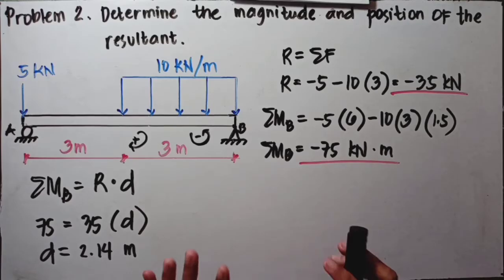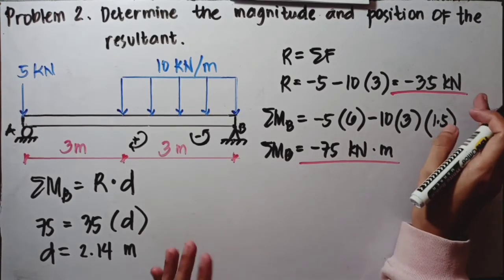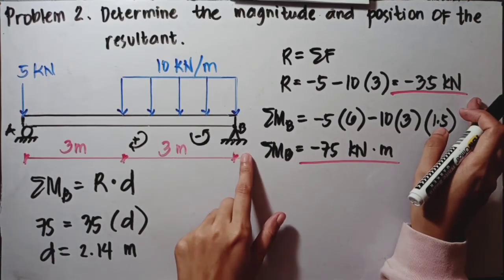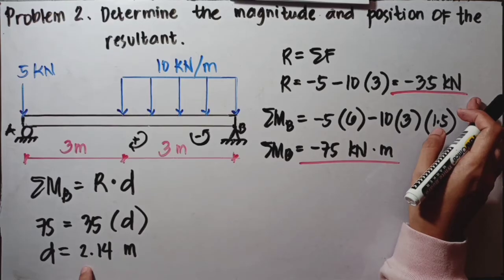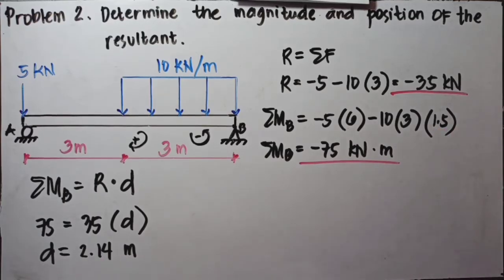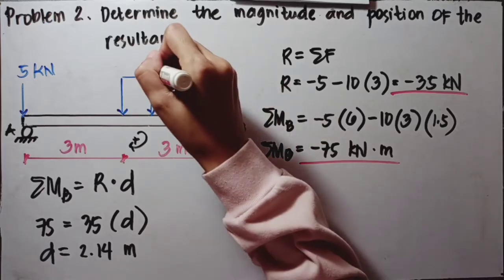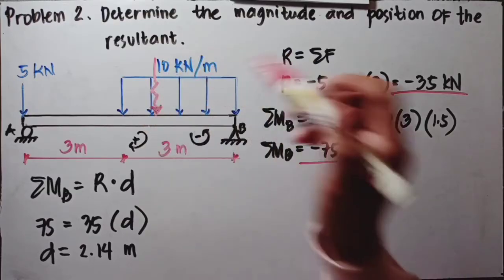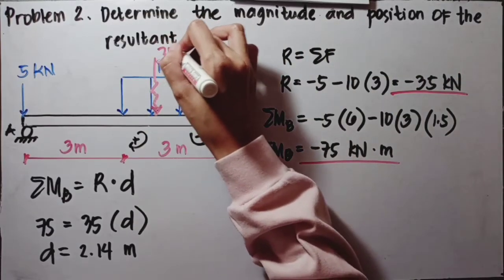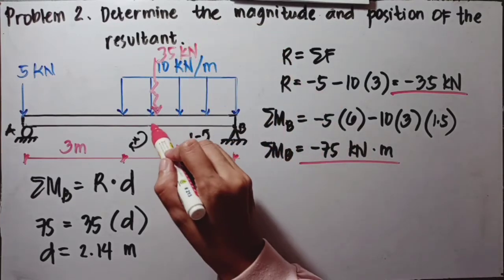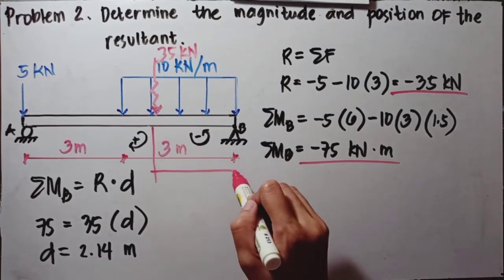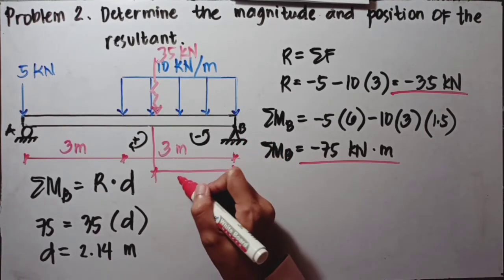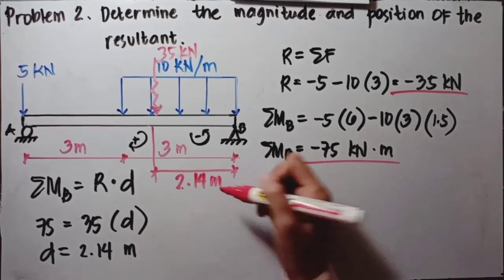This means the resultant, which is negative 35 kilonewtons going downward, is located 2.14 meters from point B — the hinge support. So measuring 2.14 meters from the hinge, we can identify where the resultant of 35 kilonewtons acts on the beam.